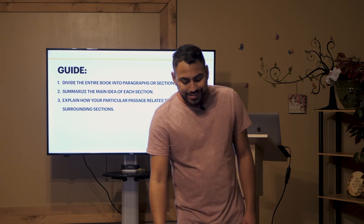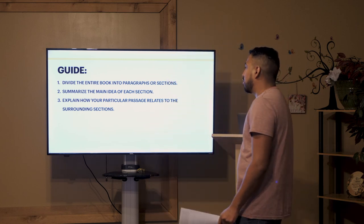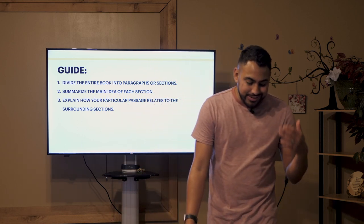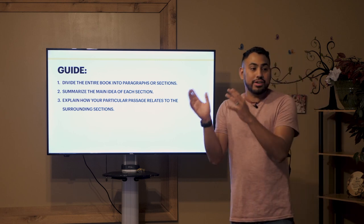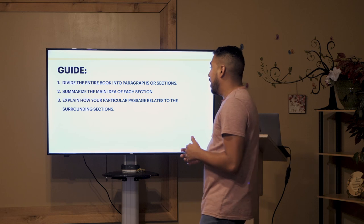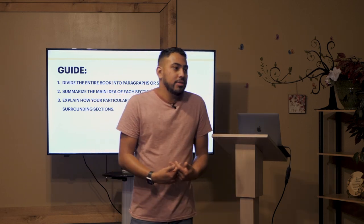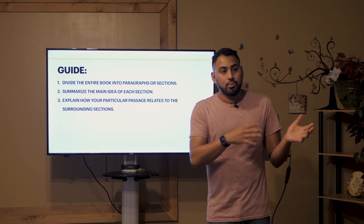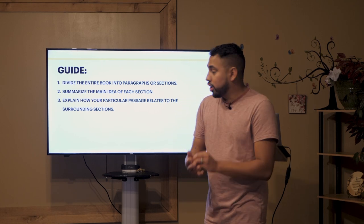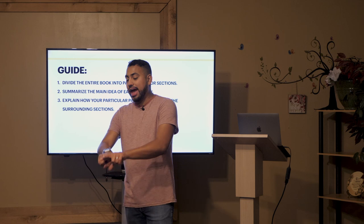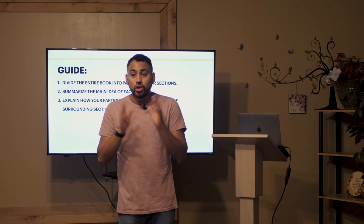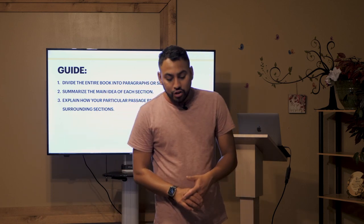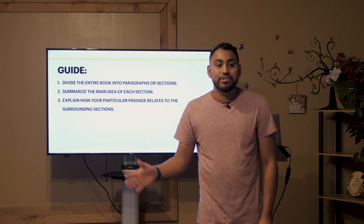The Bible, when it was written, didn't have chapters and verses — that was added later so we could find and reference things. Many times we want to divide things up and think we'll just read this one verse, when we actually need to understand how these sentences work together. Identifying the surrounding context is important because we want to see where the connections are, where thoughts begin and end. The first thing to do is identify how the book is divided into paragraphs and sections. Look at the whole book and how it's separated. You can do this by looking at various translations and seeing how they divide the sections.